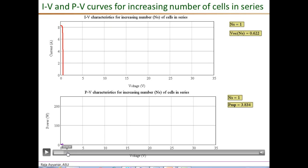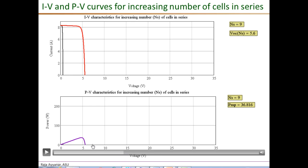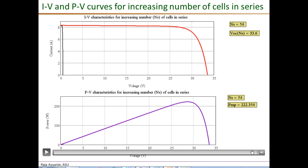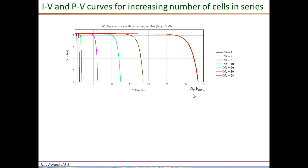For NS equals 4, the open circuit voltage is roughly four times that of a single cell, and the peak power level is also four times higher. For 9 cells, voltage increases further and peak power also increases. Continuing through 25, 36, up to a module of 54 cells in series, the open circuit voltage reaches 33.6 volts and peak power is roughly 222 watts.